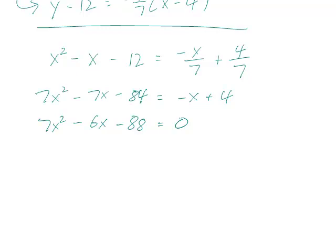So, you could try to factor this, but there are so many possibilities, it may actually be easier to use the quadratic formula, which, if you remember, is x equals negative b plus or minus square root of b squared minus 4ac over 2a.